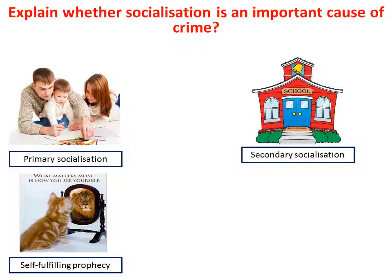Also linking in is strain theory — the idea that the pressure to succeed encourages people to turn to crime. Because people want to be deemed successful but often can't achieve it legitimately, criminal behaviour becomes an easier option to earn money rather than going down the legal path. You've also got territorial identities and gangs: postcode violence, where people mark their areas and become involved in criminal behaviour purely because of where they're from. Rival gangs are a good example you could use here.